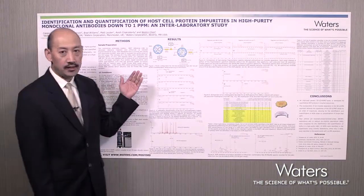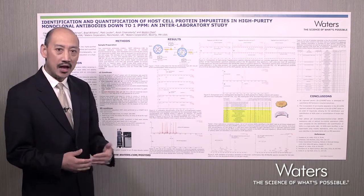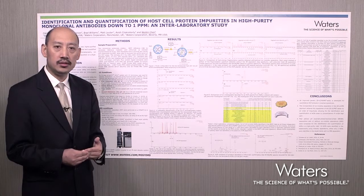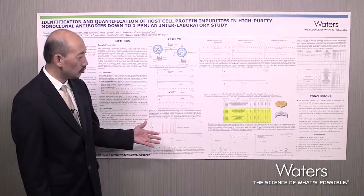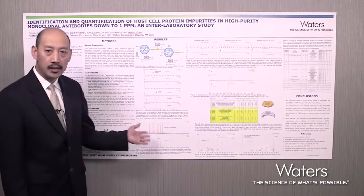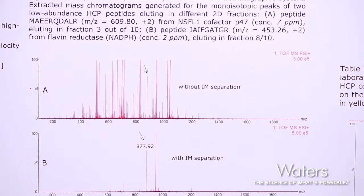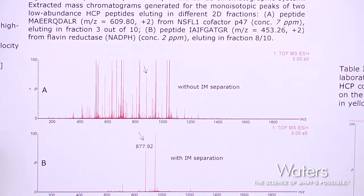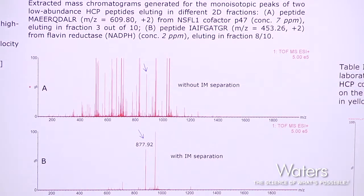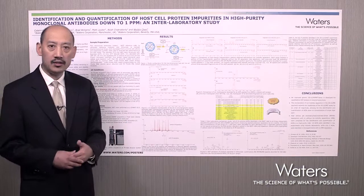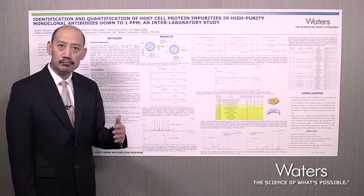Another technique we use for host cell protein analysis — given the complexity of the sample — is that two-dimensional chromatography alone may not provide adequate sensitivity to reach single-digit ppm levels. So the second technique included in this methodology is ion mobility separation. Ion mobility separation is done on the microsecond scale versus the second scale of typical LC separation. We incorporate ion mobility on top of the LC separation, which greatly simplifies the spectra and allows us to more clearly see low-abundance host cell protein signals.